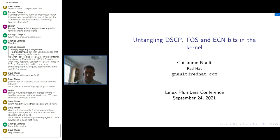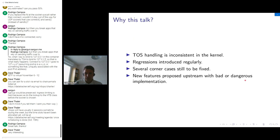In this talk, I'm going to describe the problems we have in the Linux kernel regarding the way we handle the TOS field in IP packets. The main problem is that we handle the TOS in somewhat inconsistent ways, and because of that, regressions are introduced every now and then.